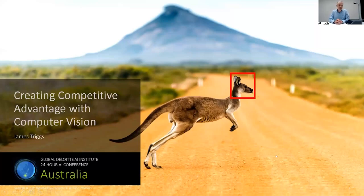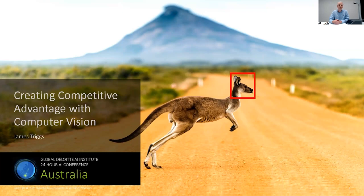James Triggs from the data and AI team in Sydney. Today I'm going to be talking about this unit, which you'll see here, which is also why I don't have the fancy virtual background turned on. I'll give you a bit of context and we'll be talking through creating competitive advantage with computer vision using this device here as an example.